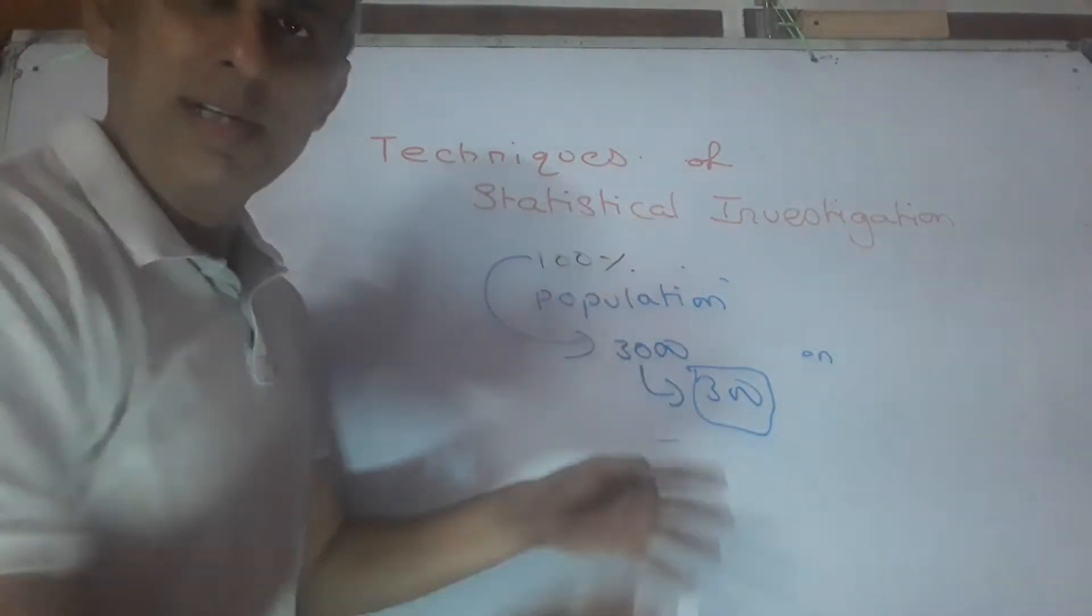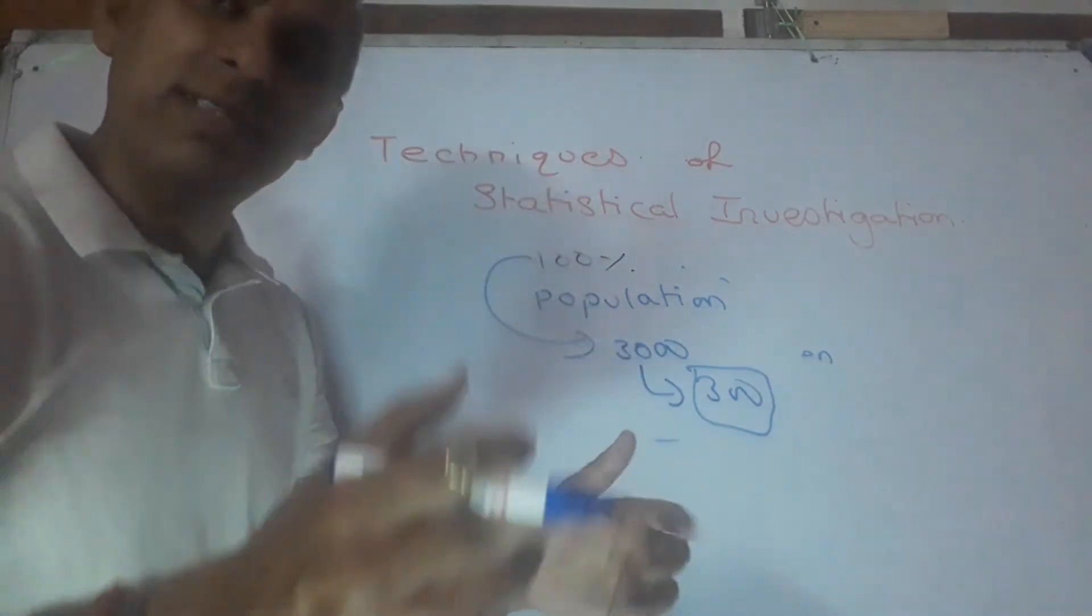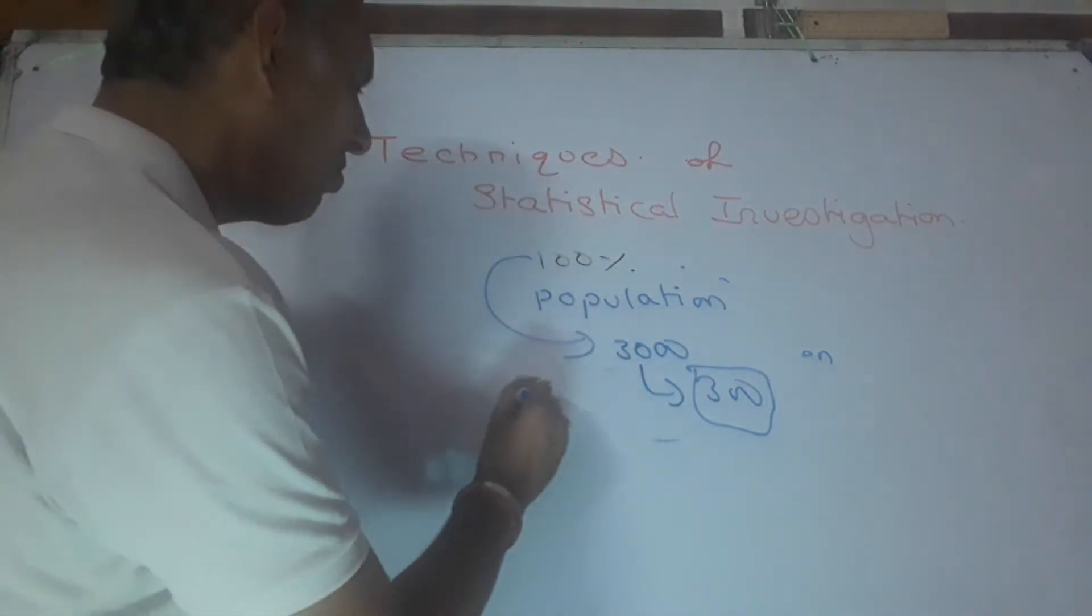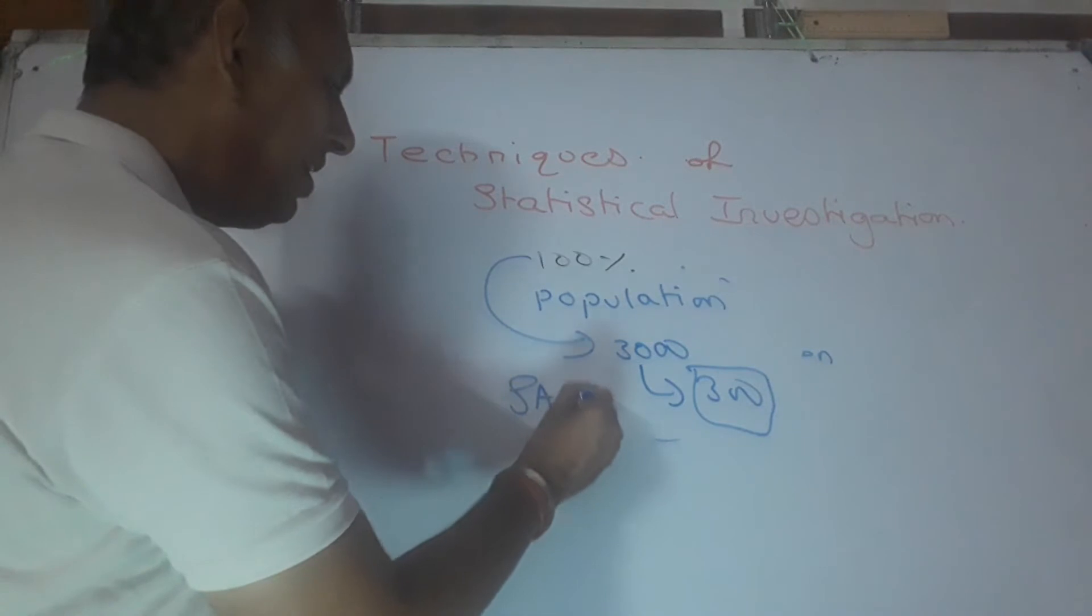Only with 300 we can magnify the result for 3000. Now that is what you call it as sampling technique of statistical investigation. What is it? Sampling.